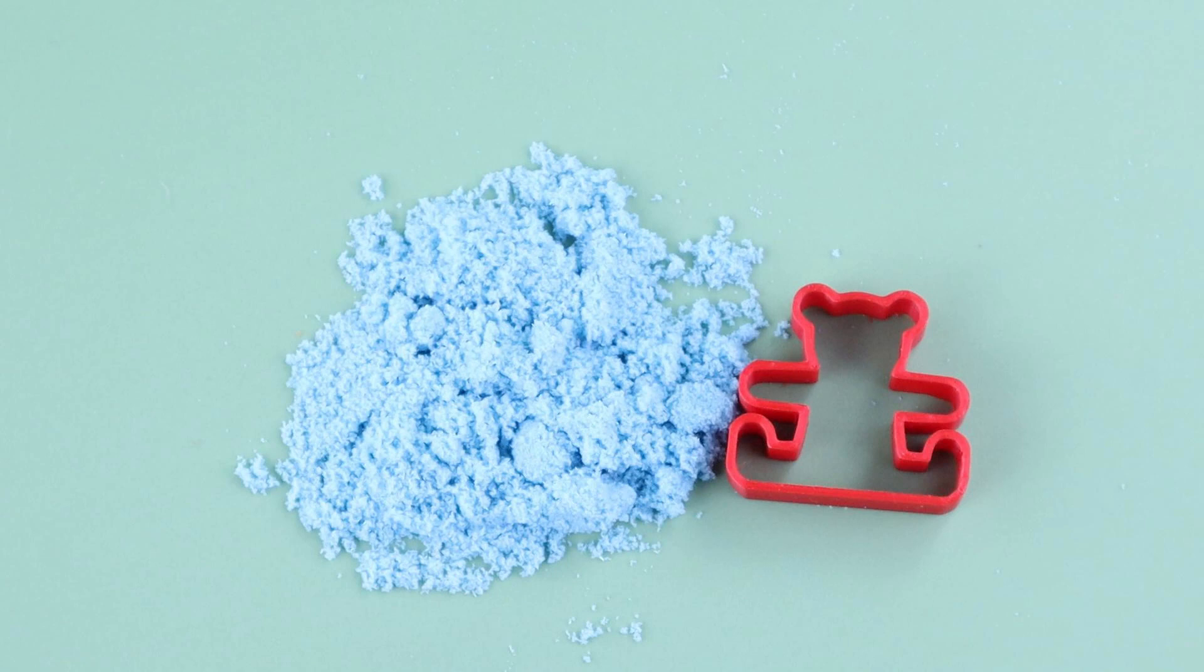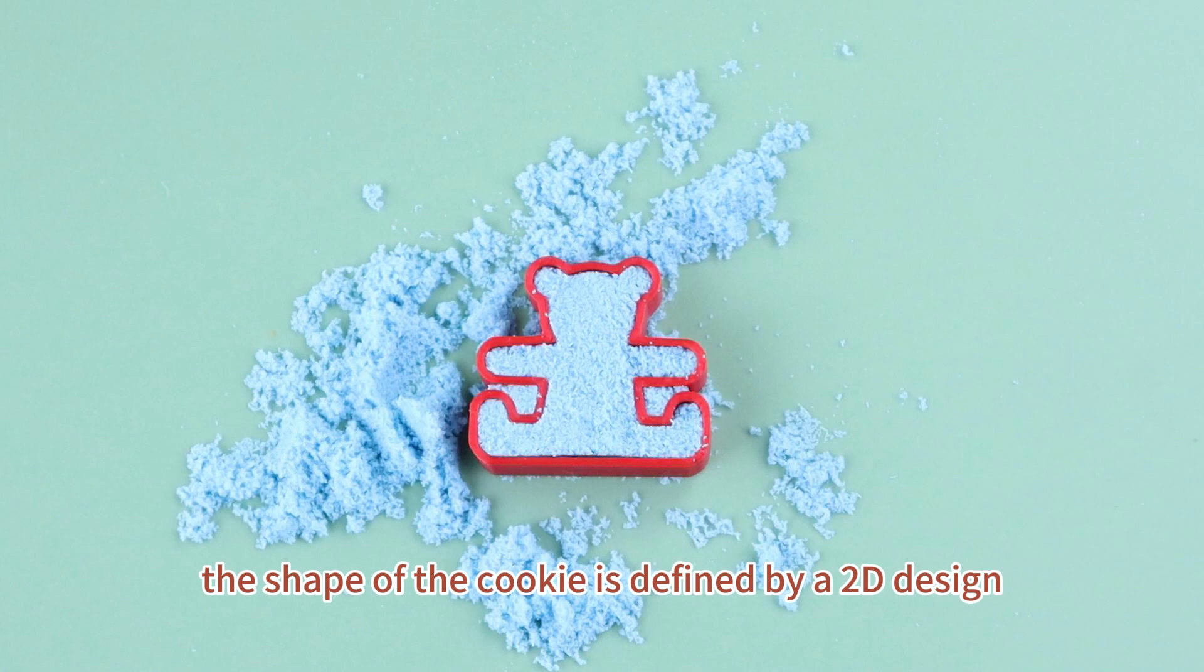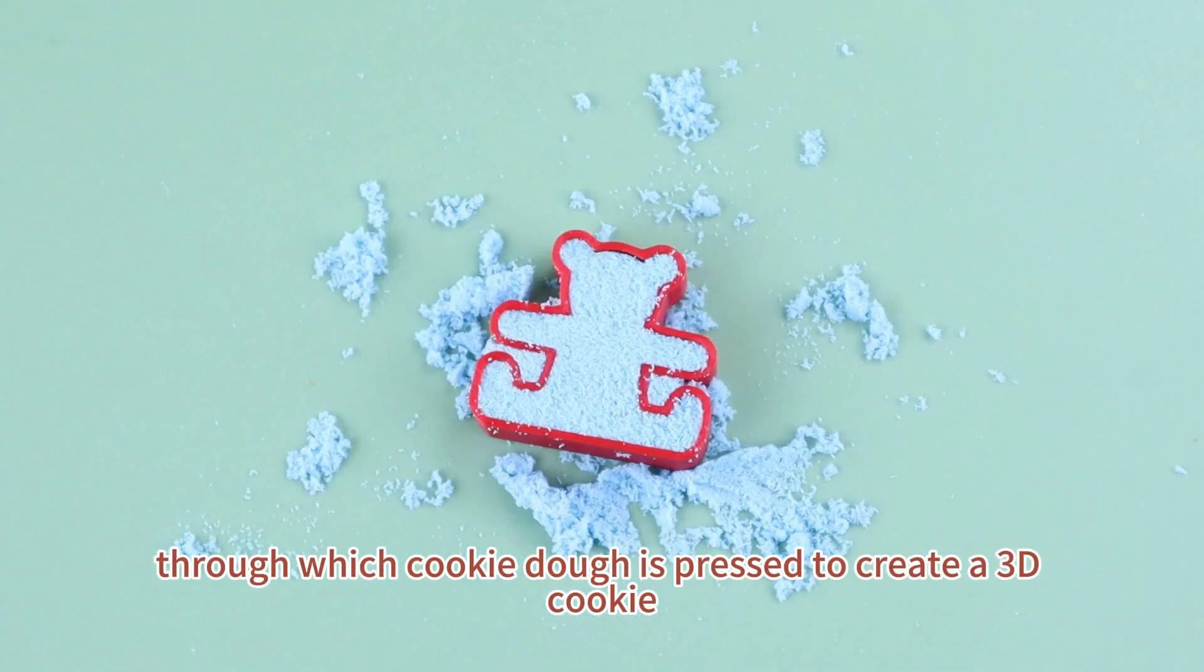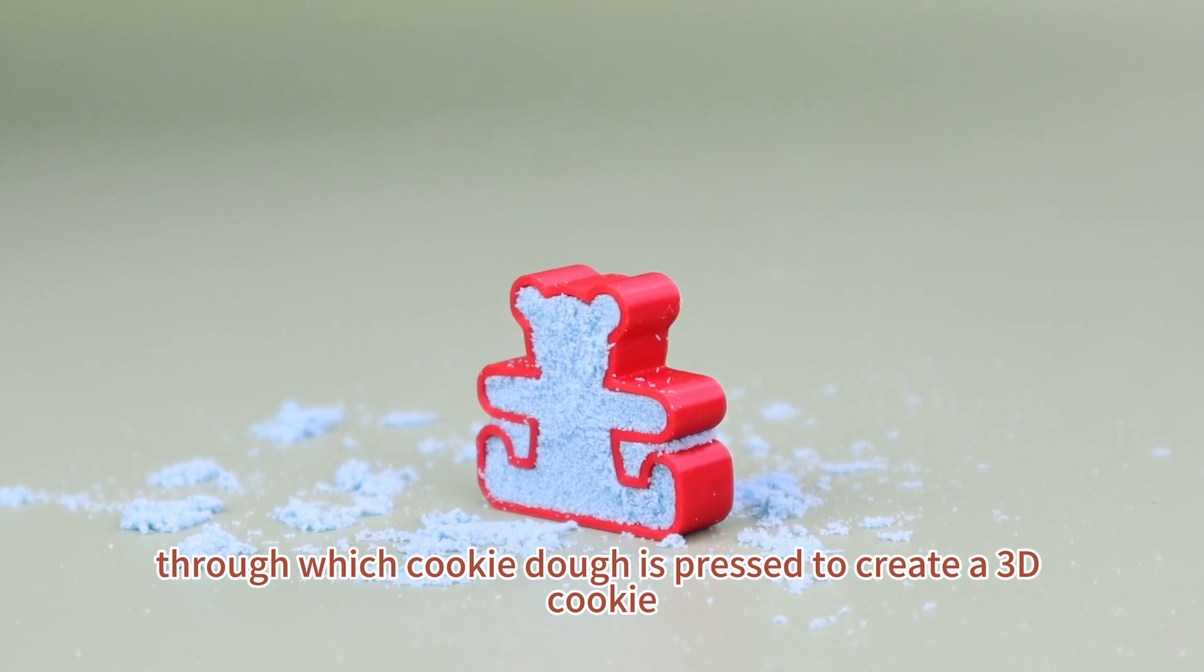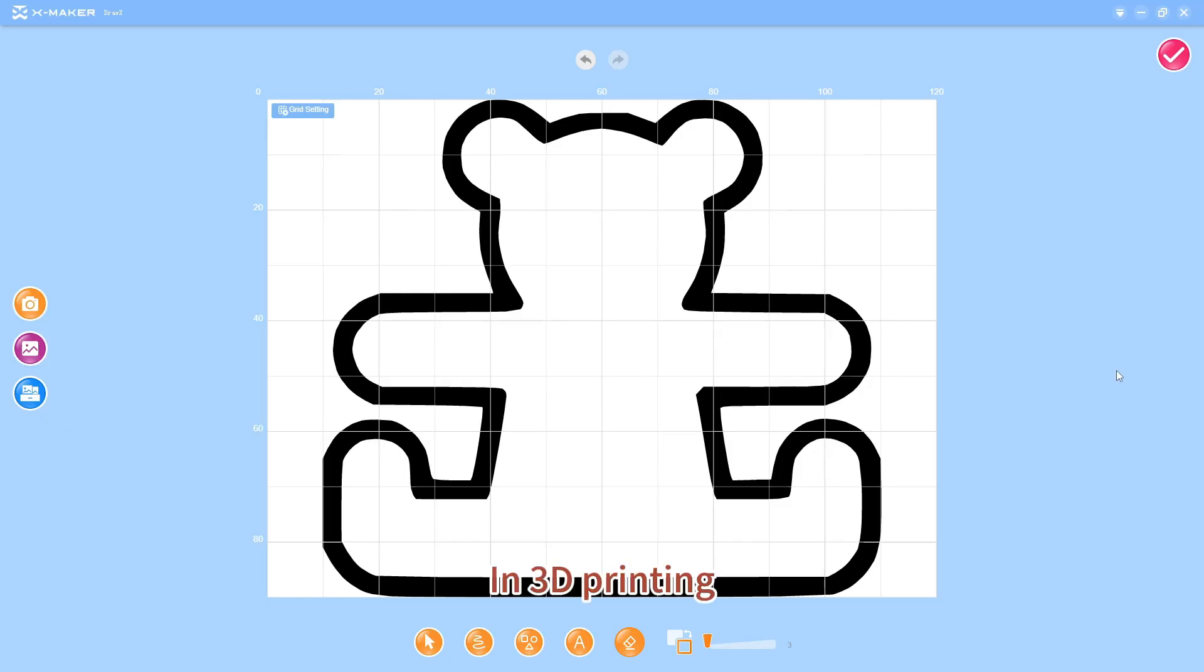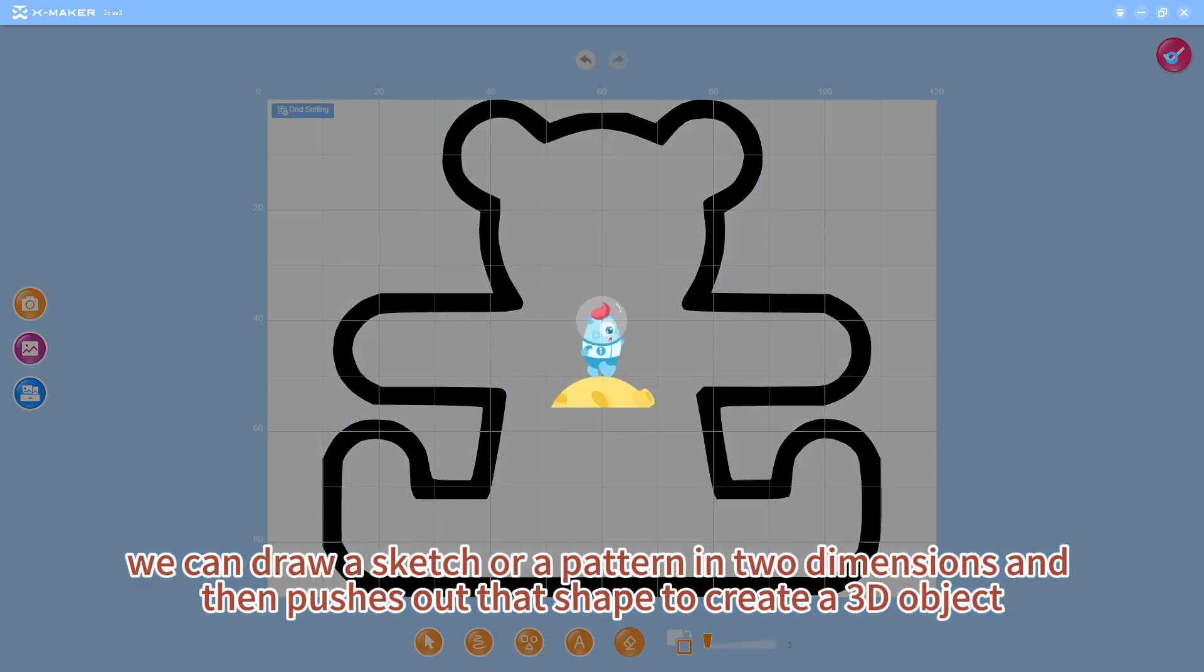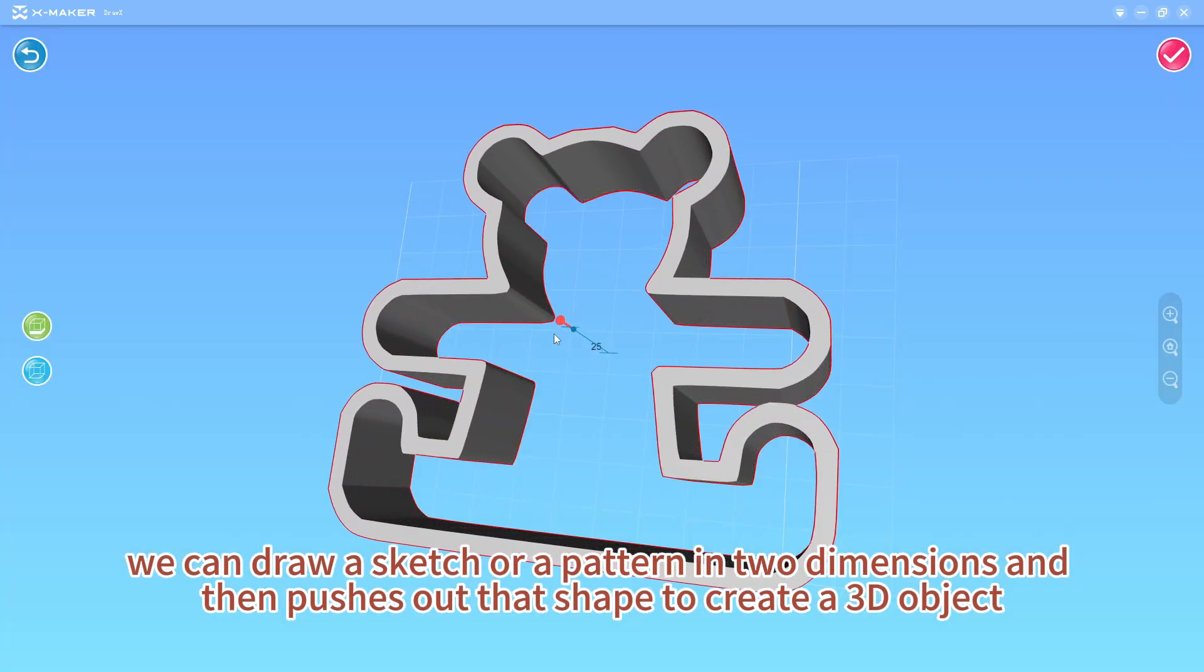Observe this bare cookie cutter. In baking, the shape of the cookie is defined by a 2D design, through which cookie dough is pressed to create a 3D cookie. In 3D printing, we can draw a sketch or a pattern in two dimensions, then push out the shape to create a 3D object.